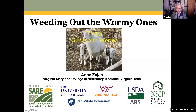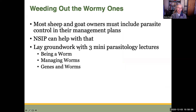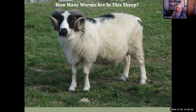This is Anne Zajac again, here for my last mini-lecture to lay the groundwork for using estimated breeding values in genetic selection for resistance to parasites. I've already talked about some of the essentials of the important parasites of sheep and goats, and I've talked about the strategies we use for controlling the worms. Now I want to talk about genes and worms.